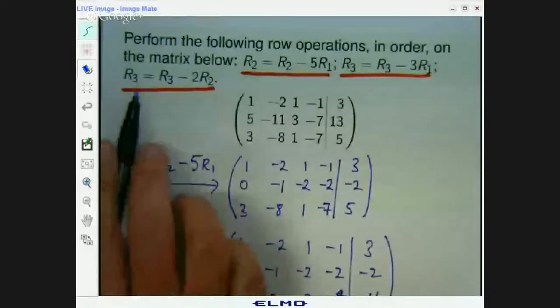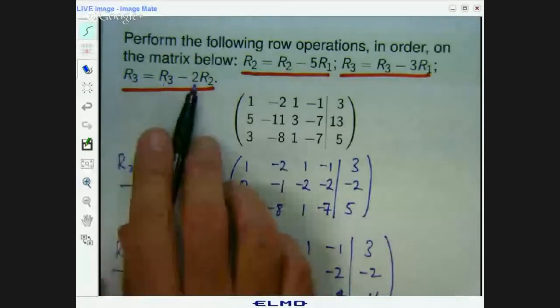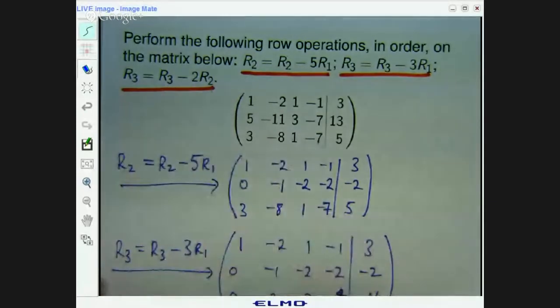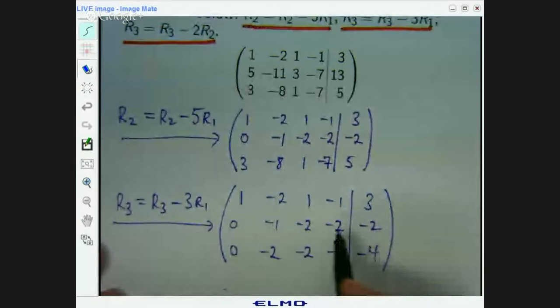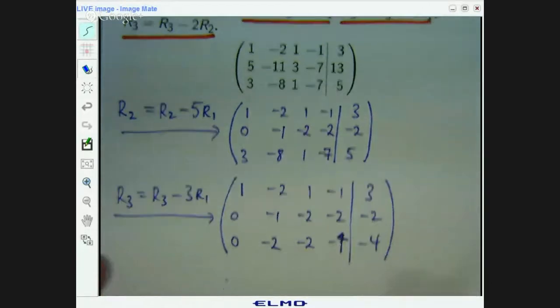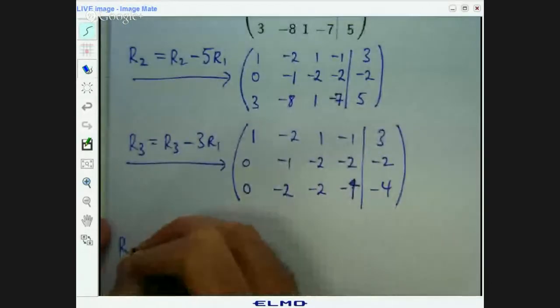Okay. The last operation is row 3 equals row 3 minus 2 times row 2. So we want to take, we want to work on this row and take away 2 times this row from it. Okay. So this is how I would record it.